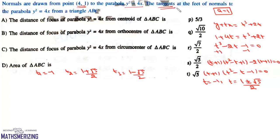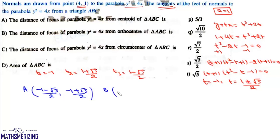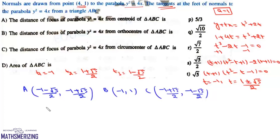The vertices are: A at t1 and t2, so A = (t1·t2, t1 + t2) = (-(1+√5)/2, (-1 + √5)/2); B at t2 and t3, giving t2·t3 = (1-5)/4 = -1, so B = (-1, 1); and C at t1 and t3, giving C = ((-1+√5)/2, (-1-√5)/2).